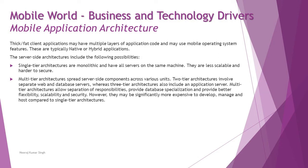When it comes to thick and fat client applications, they may have multiple layers of application code and may use mobile operating system features — these are typically native or hybrid applications. The fat client has multiple layers starting with web services, a security layer, APIs calling different structures, interacting with the database, third-party software, and more. These are used for native or hybrid apps that interact with sensors, hardware, contacts, camera, and many other device features.